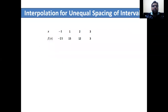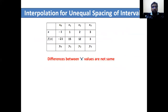What is interpolation for unequal spacing of intervals? It means when the value of x is different in each step — for example, minus 1 to 1 has a spacing of 2, and 1 to 2 is 1, and 2 to 3 is 1. So this is an unequal spacing of intervals. The x values are denoted x0, x1, x2, x3, and the corresponding function values are denoted y0, y1, y2, y3.